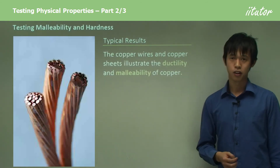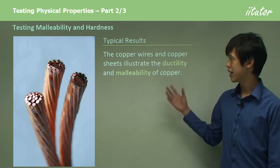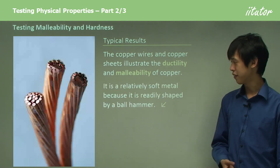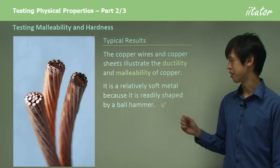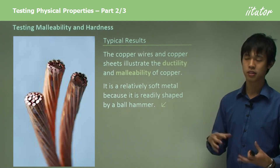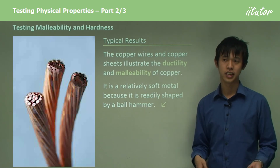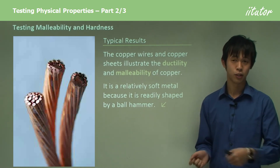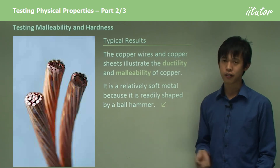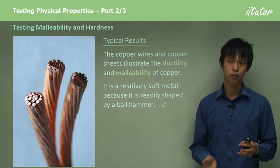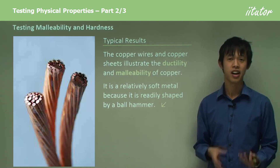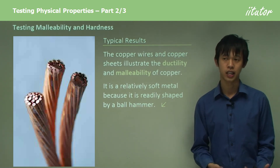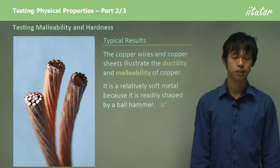The copper wires and copper sheets illustrate the ductility and malleability of copper. When we look at the copper wires, they show us the properties of copper very well. It's a relatively soft metal because it's readily shaped by a ball hammer — you can actually deform it very easily. The copper wire itself shows how well it can be drawn into wire. Copper can be deformed much more easily than something like iron, which is a very hard substance and takes a lot of effort to shape correctly.